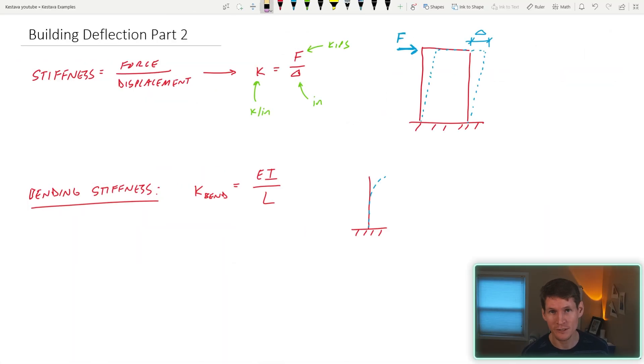Bending stiffness in its simplest form can be derived with the following equation. E is your modulus of elasticity of the material, I is your moment of inertia, and L is the length of your member.